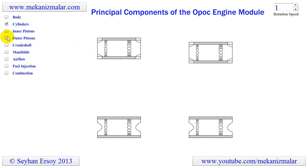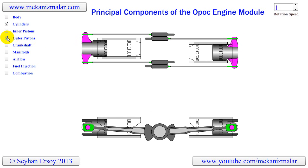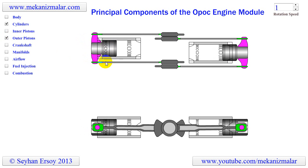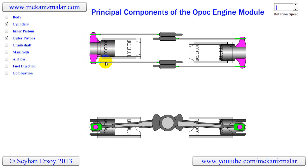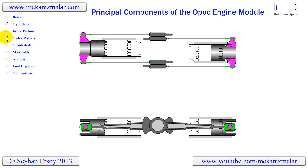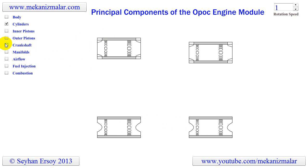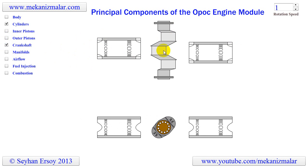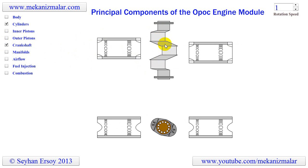Note that for this case there are two connecting rods for each piston and they are outside of the cylinders. The connecting rods are connected to the crankshaft of the engine, which is located at the center of the engine body.